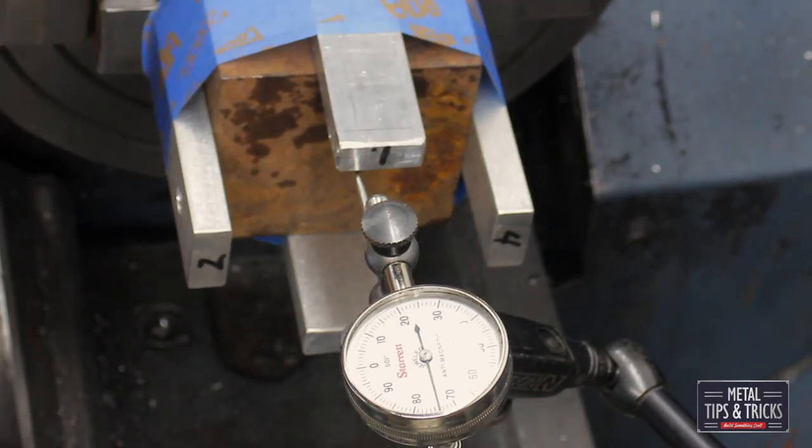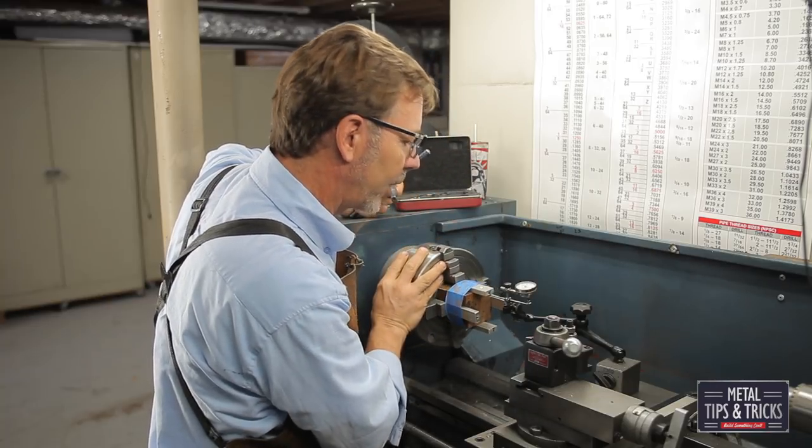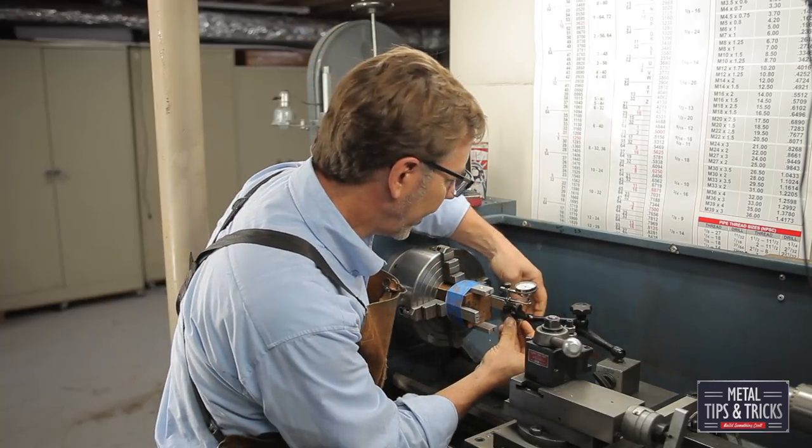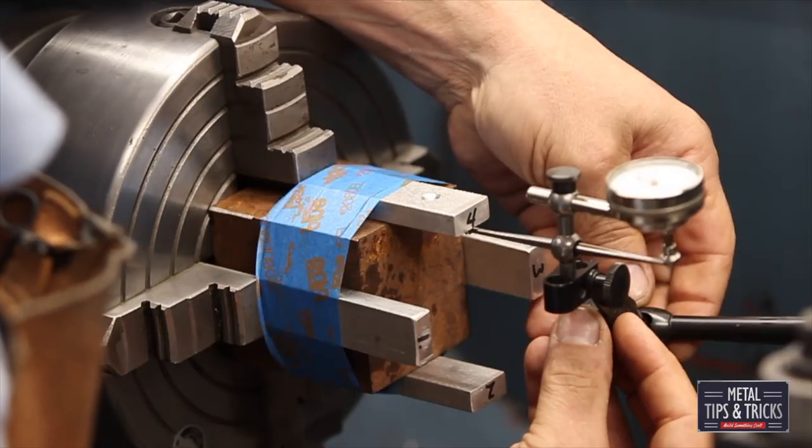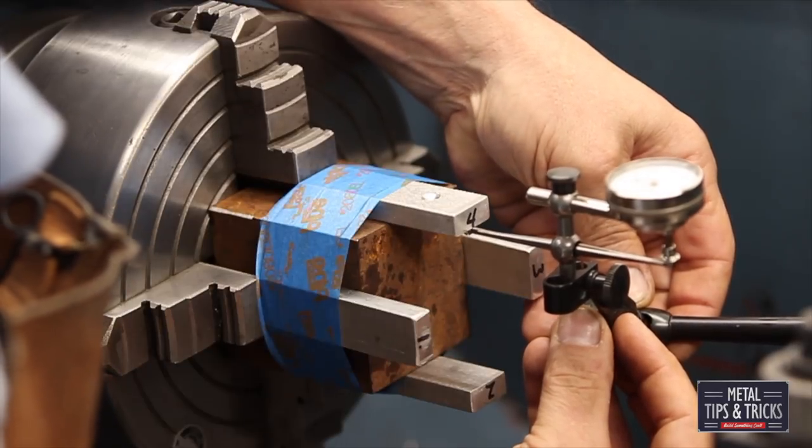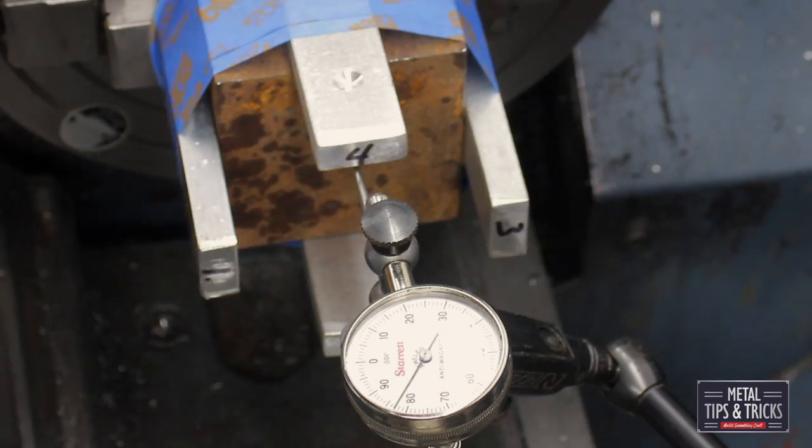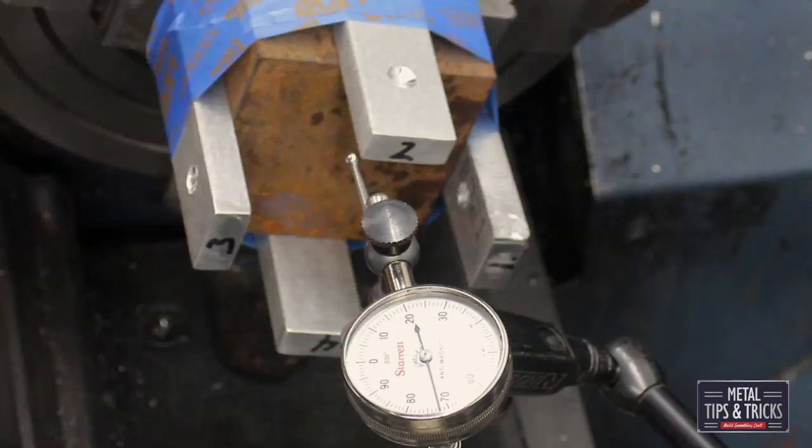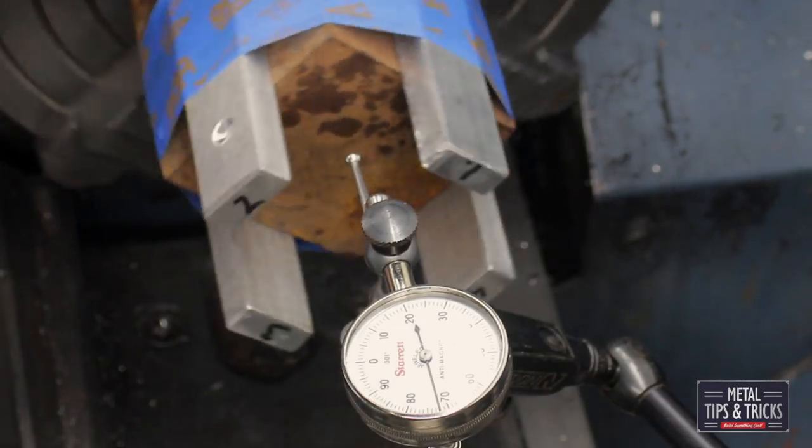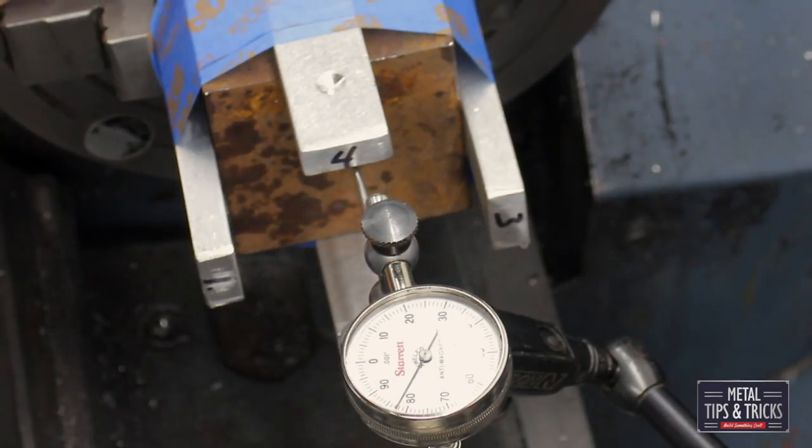So now we've got sides one and three lined up. Now we're going to do the exact same thing with four and two. We're going to just kind of get this needle set into place. 66, 51, 53, 54.